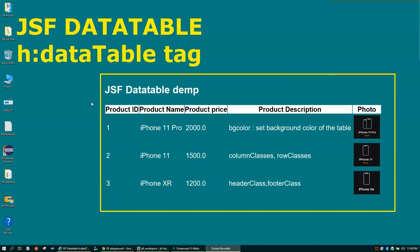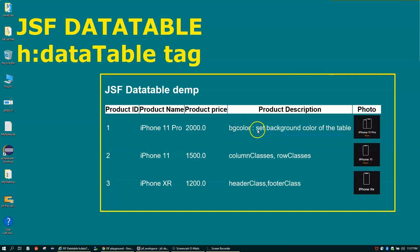Hello friends, welcome back. In this video we'll talk about something called h:dataTable tag. This tag is similar to the HTML table tag where you can create a table structure with columns, rows, and table headers. JSF provides its own tag called h:dataTable. We'll also see how to display an image.